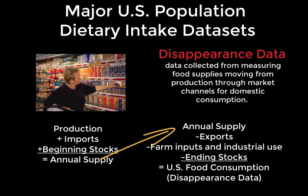After subtracting exports, farm inputs, and ending stock, we arrive at U.S. food consumption — the amount that disappeared into the retail and commercial marketplace. However, for something like a woman purchasing cheese, that cheese has been counted in the data set, but there is no direct observation that she actually ate it. She might use cheese to train her dogs, for example, which would still be counted in disappearance data but was not consumed by people. So there is some noise in that data set. Despite this possible error, it is very useful for observing changes in food production and availability in the United States.